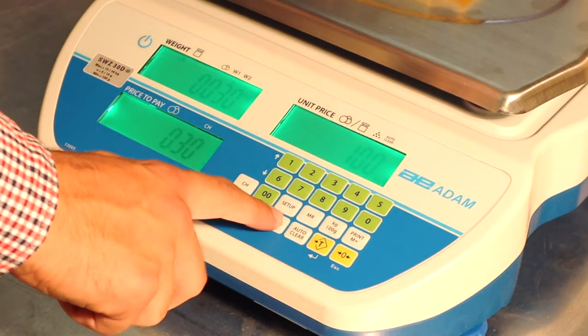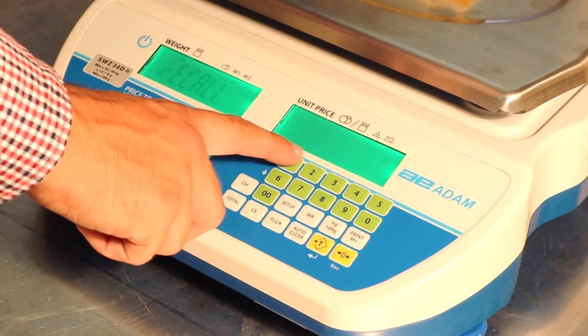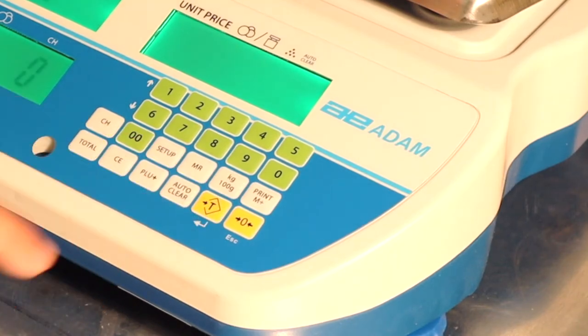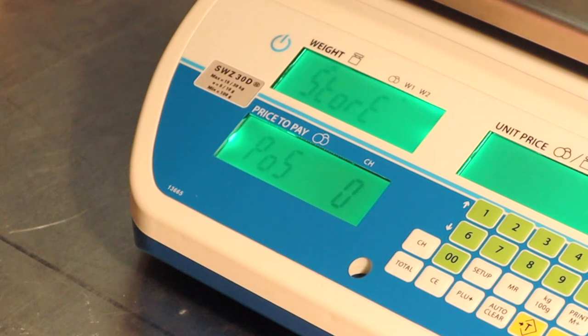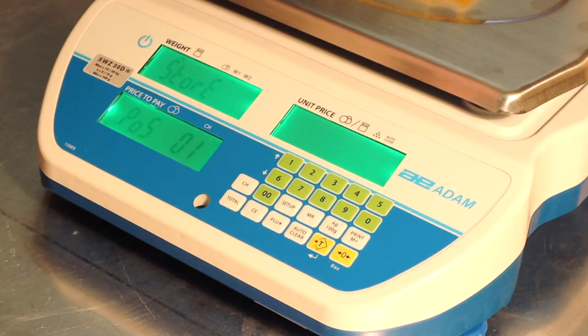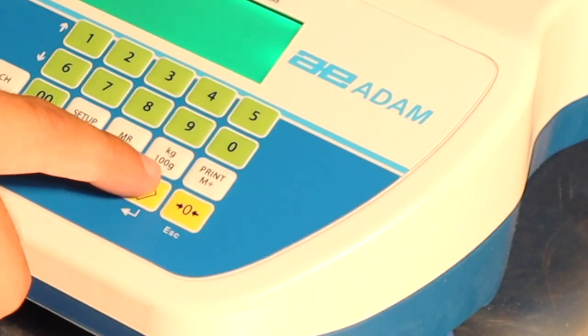To store the price in the scale's memory, press the PLU button. Press the number 1 button once so that the display shows store, and press the tare button to confirm. The bottom left display will show the position of the item in the memory, and you can use the numeric keypad to confirm the position. In this case, 1. Press tare to confirm.